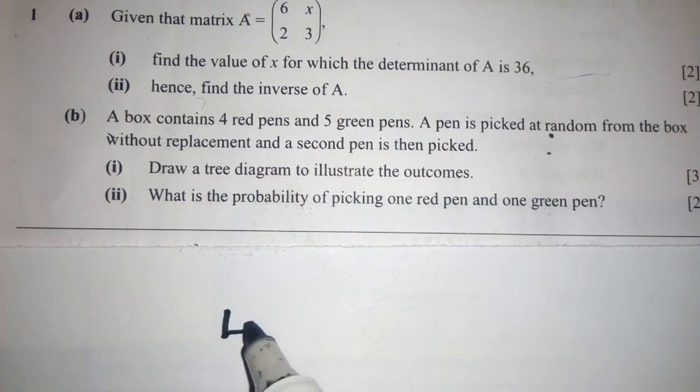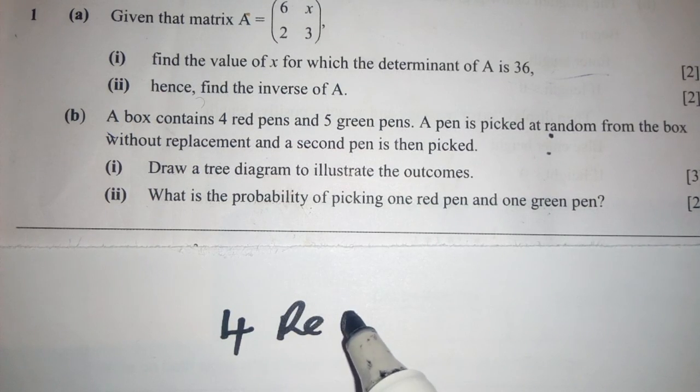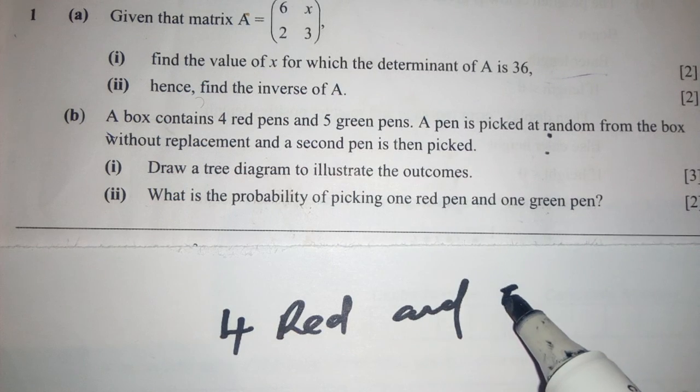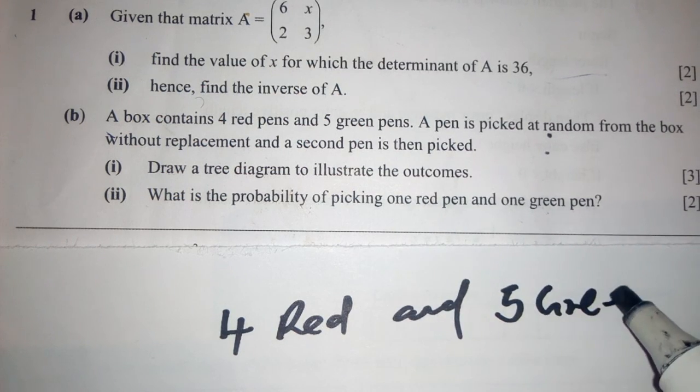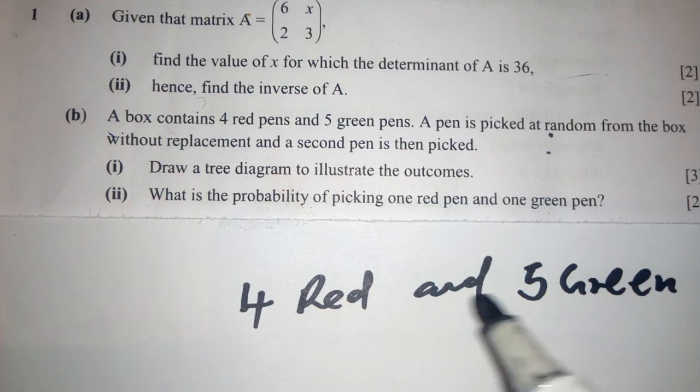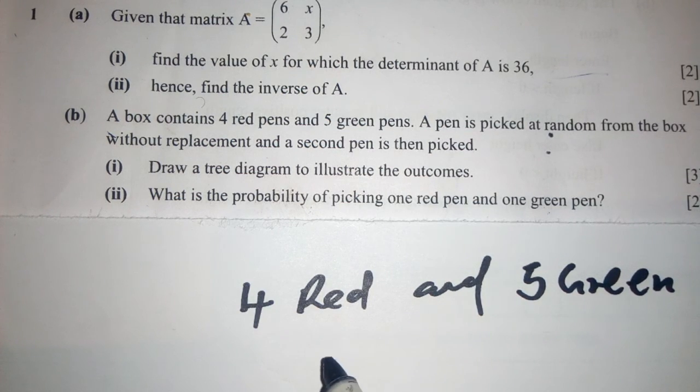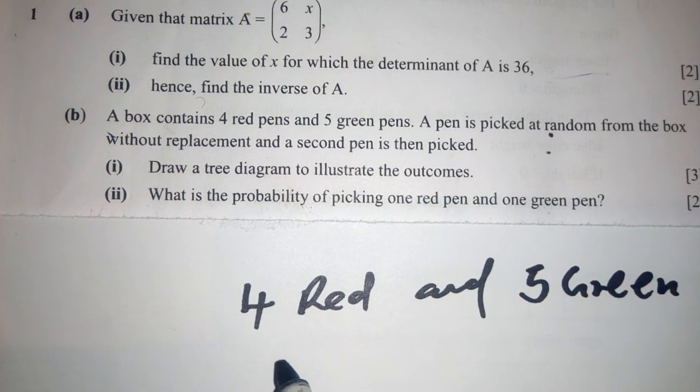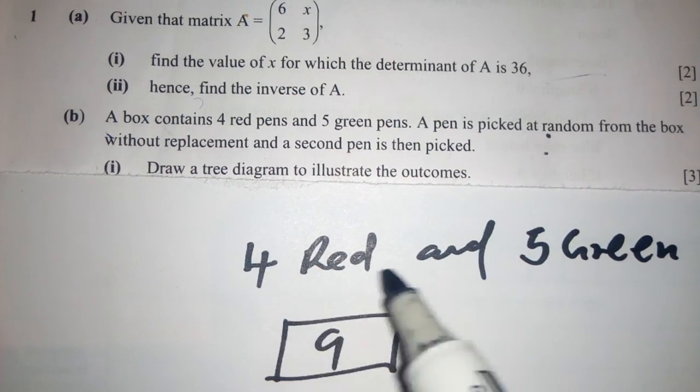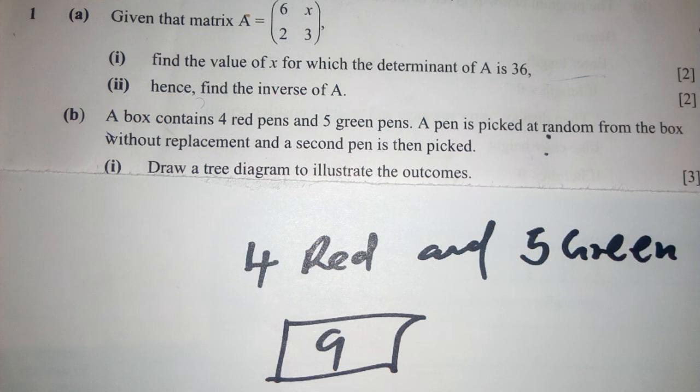There are four red pens and five green pens. So you first add the number of pens in the box. In the box we have nine pens. When we add 4 plus 5, it's 9.